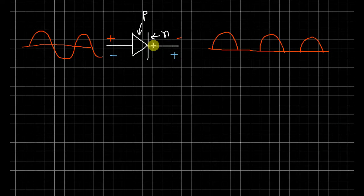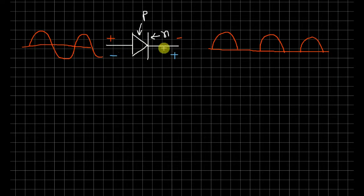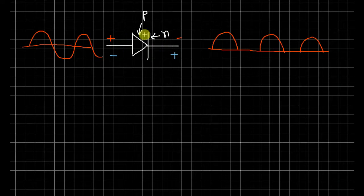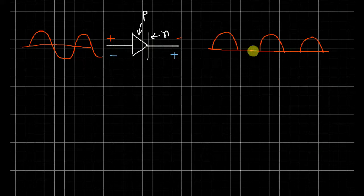That is why the negative half cycle is blocked. The diode input is P-type negative and N-type positive, so the diode is reverse biased and no current flows during the negative half cycle.